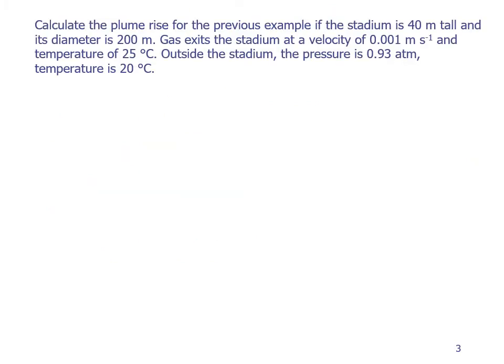Here's an example problem. We want to calculate the plume rise for the previous example of ethanol coming from Lean Stadium. If the stadium is 40 meters tall, so that's our lowercase h, and its diameter is 200 meters. This is kind of a ridiculous example, because usually your stack is tall and the diameter is relatively small compared to its height. Here we're considering the stadium as a stack, so it's a really wide, huge diameter stack. Gas exits the stadium at a velocity of 0.001 meters per second and a temperature of 25 degrees Celsius. Outside the stadium, the pressure is 0.93 atmospheres, and the temperature is 20 degrees Celsius. The one thing we're not told here is the wind speed.